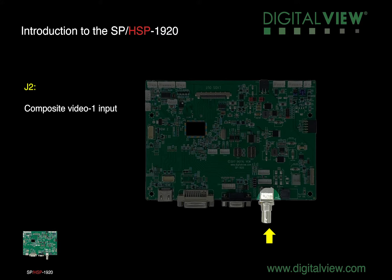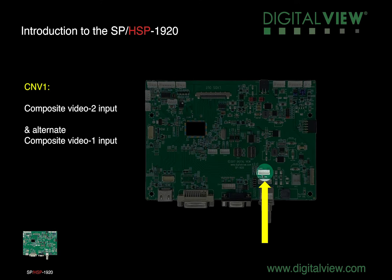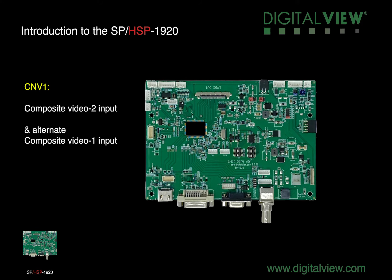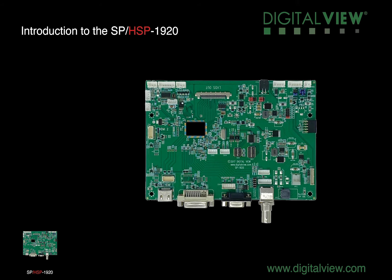J2 is the Composite Video 1 input. CNV1 supports the Composite Video 2 input and an alternate to the Composite Video 1. CNV2 is SD and HD component video input.